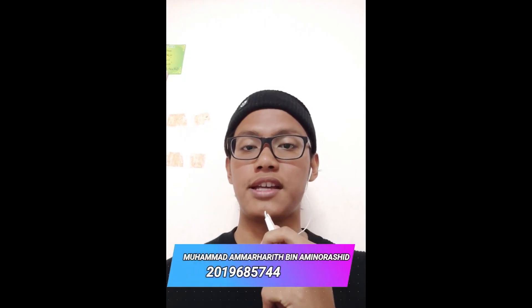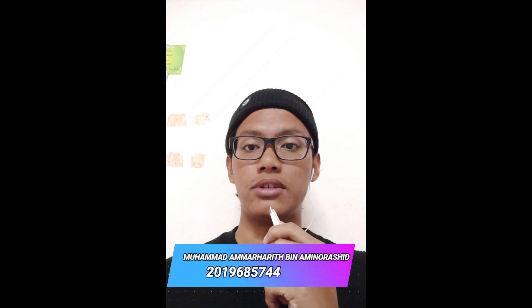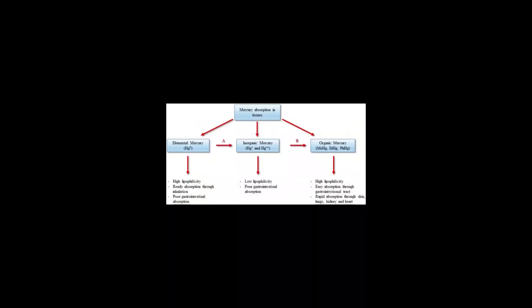I will be explaining about the effects of mercury pollution. Mercury exists in various forms such as elemental, inorganic and organic. These forms of mercury differ in their degree of toxicity and their effects to humans, animals and the environment.